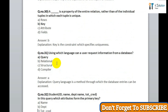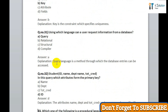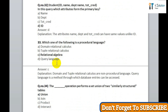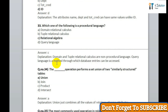Question 31: using which language can a user request information from a database? Correct answer is query. Question 32: student ID, name, department name, total credit — in this query, which attribute forms the primary key? Correct answer is option D, ID. Question 33: which one of the following is a procedural language? Correct answer is option C, relational algebra. Question 34: the union operation performs a set union of two similarly structured tables — correct answer is union. Question 35: the most commonly used operation in relational algebra for projecting a set of tuples from a relation is select.